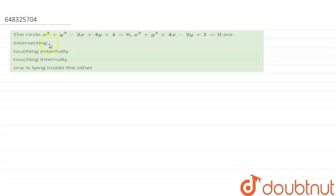Hello everyone, come to the question. The circle x square plus y square minus 2x plus 4y plus 4 equals to 0 and x square plus y square plus 4x minus 2y plus 1 equals to 0. There are 4 options, which one is correct?